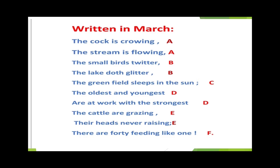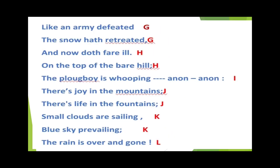And our complete rhyming scheme is: A, A, B, B, C, D, D, E, E, F, G, G, H, H, I, J, J, K, K, L. So students, this is the end of today's class. We shall not further describe any other important thing because this rhyming scheme is a very new concept for all of you, and for better understanding you need some time. In our next class, we shall discuss another important topic related to this poem. Thank you so much.